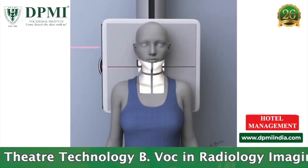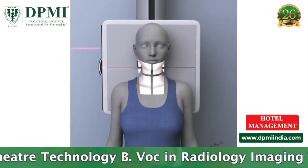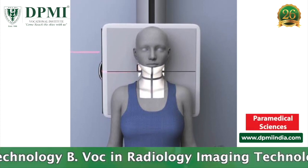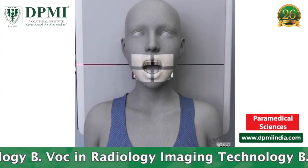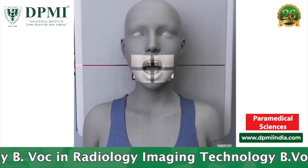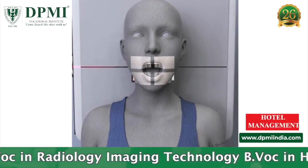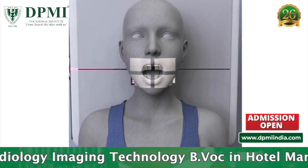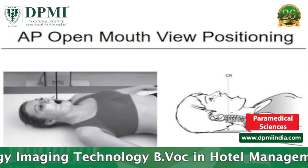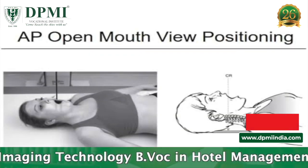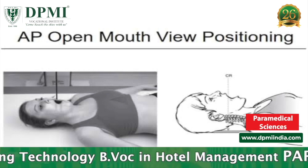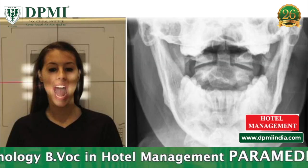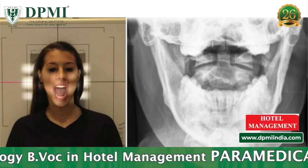Patient positioning: the patient lies supine on the table or stands with the posterior aspect of the head and shoulders against the vertical bucky. Patient shoulders should be at equal distance from the image receptor to avoid rotation. The head faces straight forward.